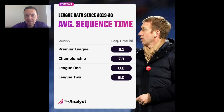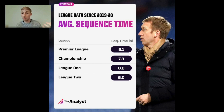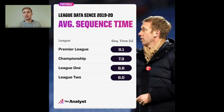Sequence time is another really interesting one. The Premier League sequence time is 9.1 seconds; League Two is 6.0. That's simply a measure of how long on average a team in that league keeps the ball — start a stopwatch when you win the ball back, time it until you lose it. In the Premier League that's 9.1 seconds on average; in League Two, six seconds. That time progressively gets lower as you go down the tiers. You could say League One and League Two teams are fairly uncomfortable in possession, or they want to go direct and go long faster.